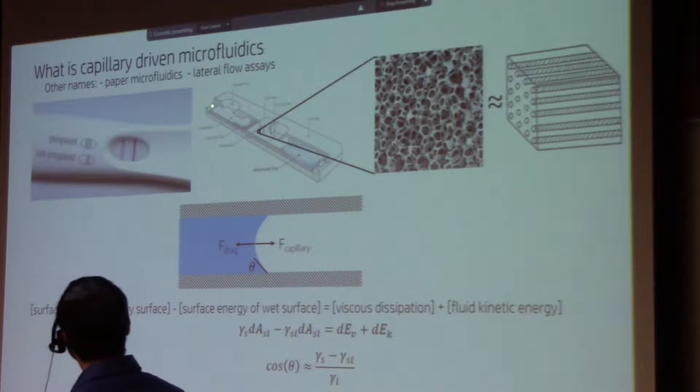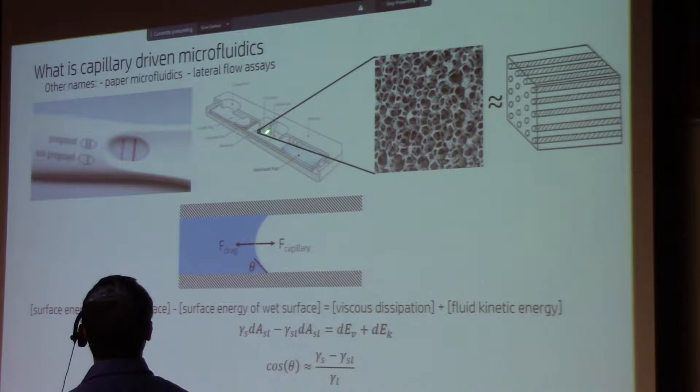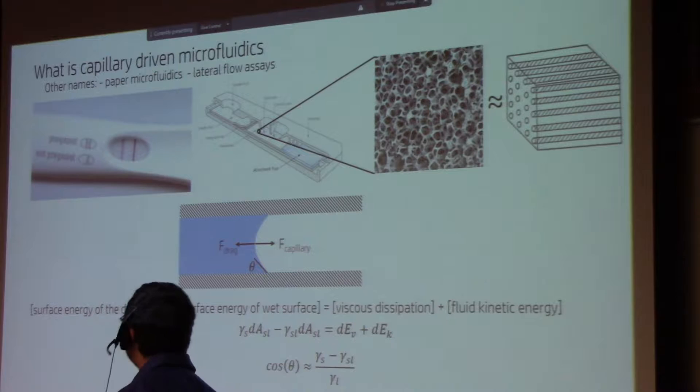This fluid from the sample wicks through the structure and eventually catches those antibodies. Those antibodies, some of them bind to your analyte. And then they travel and they hit one of these lines. And if you have the analyte there, the antibody binds to the secondary antibody and you have this nice line.